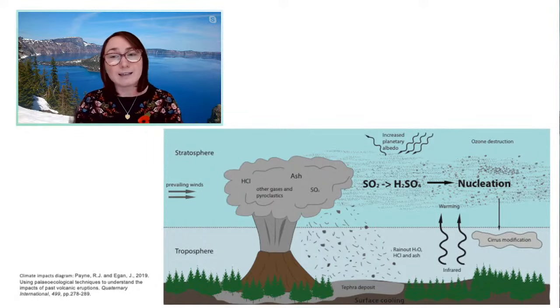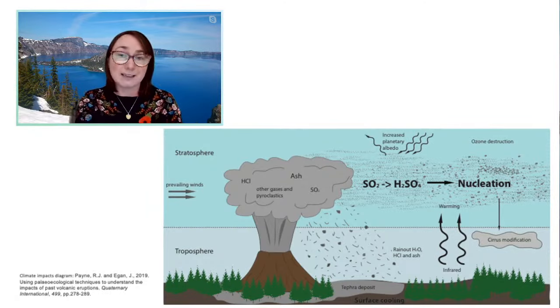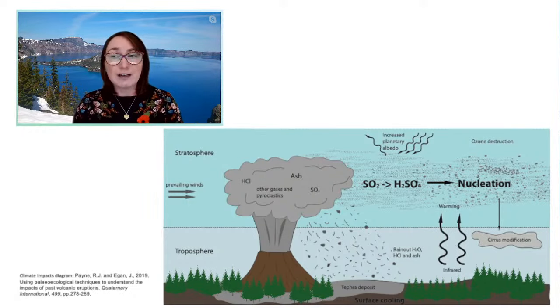That sulfuric acid aerosol creates a scattering effect on incoming solar radiation. The particles remain in the atmosphere for several years, preventing solar radiation from reaching the earth as effectively — scattered back into the atmosphere — which generates cooling. The eruption I've been studying in particular is Mount Mazama, which happened about 7,600 years ago and is now known as Crater Lake. That eruption caused a temperature decline of about 0.7 degrees Celsius, which is enough to tip some ecosystems over the edge and lasted about one to three years.